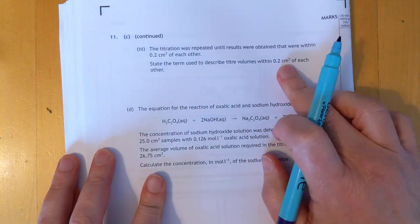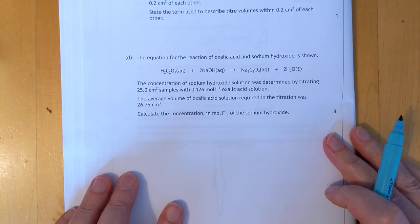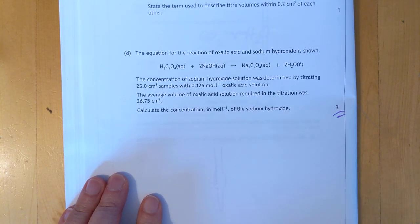Titre volumes. Concordant. Concordant volumes. That's what they're looking for there. Three mark titre. Oh, it's the end of the question paper.